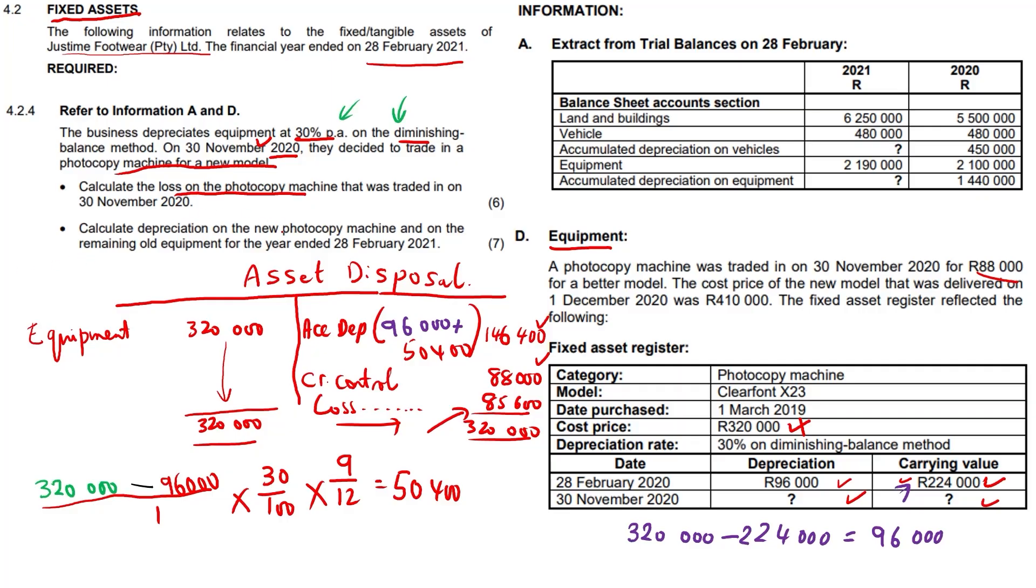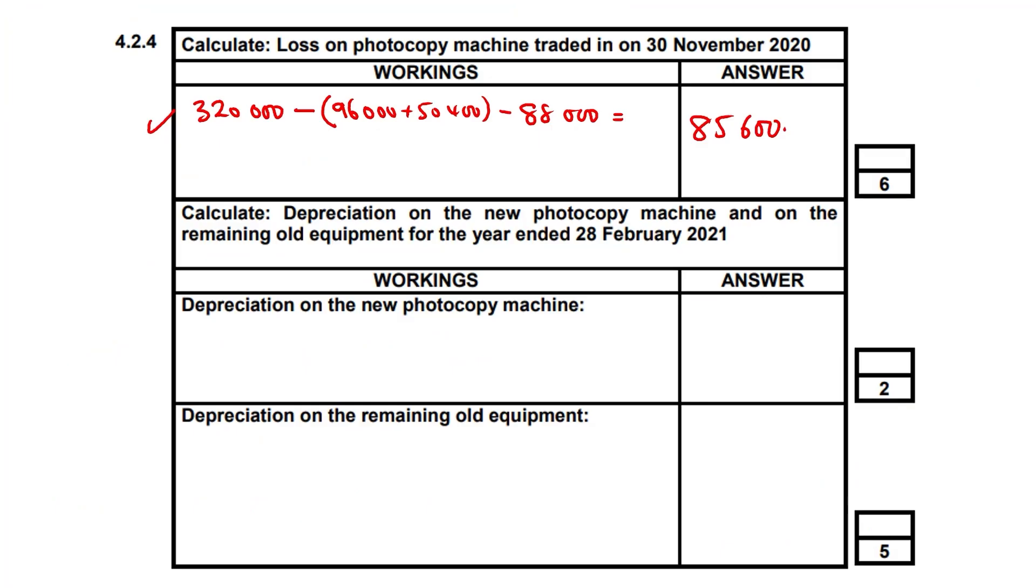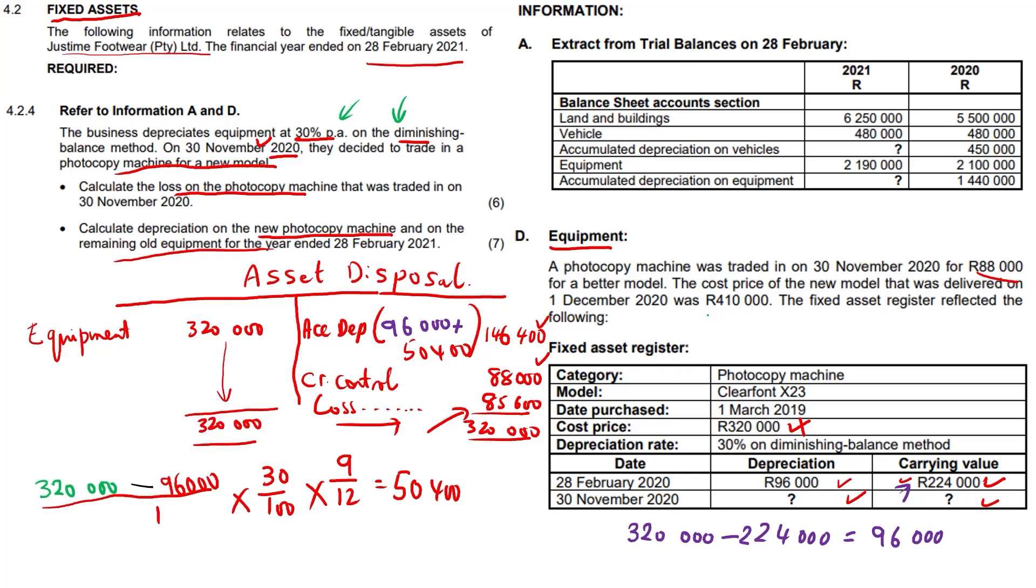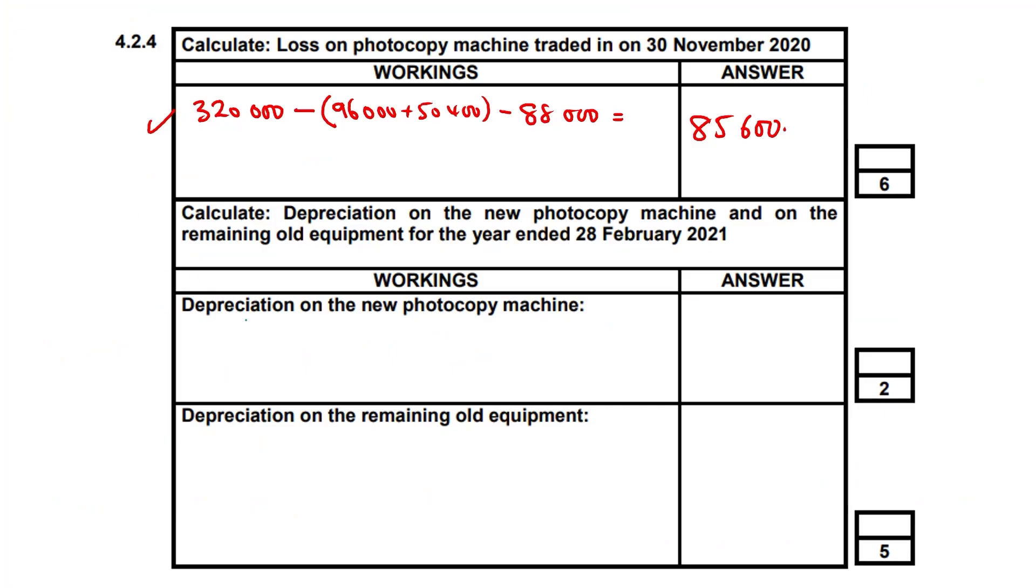Now we calculate depreciation on the new photocopy machine and on the older equipment that we didn't sell. Depreciation on the new photocopying machine: The new photocopy machine was delivered on 1st December. December, January, February to run. We paid $410,000 for it. Pretty simple calculation: $410,000—even though it's diminishing balance, there is no depreciation, we bought it in the current year—times 30 over 100 times 3 over 12. That gives us $30,750.